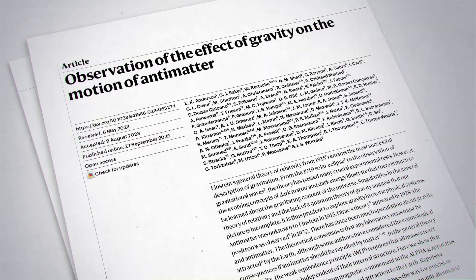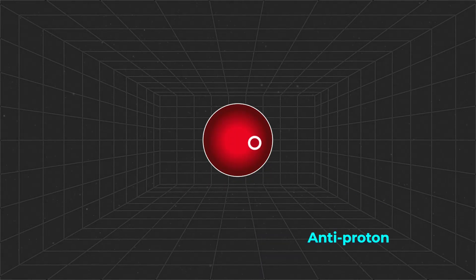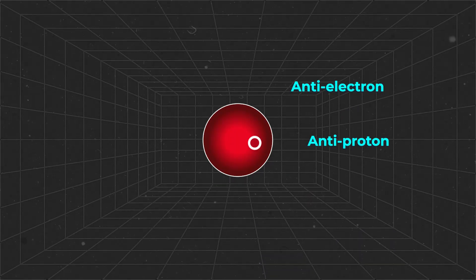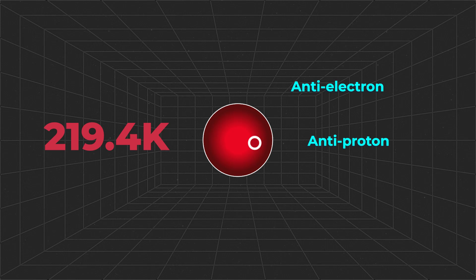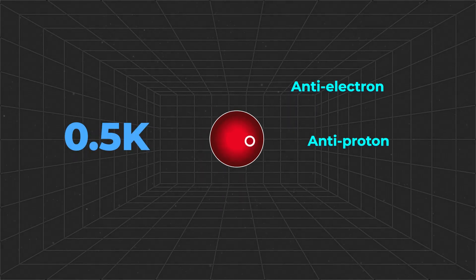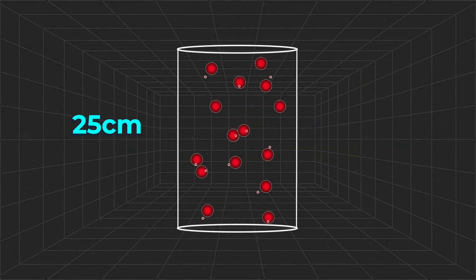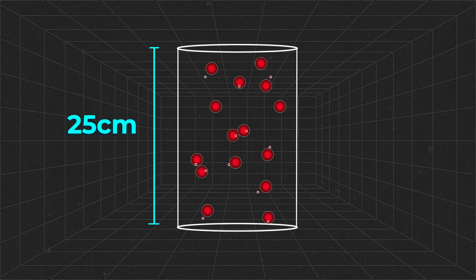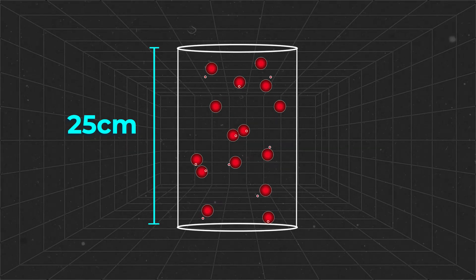The study, published in Nature, used anti-hydrogen atoms, an anti-proton and an anti-electron put together, which were cooled to half a degree above absolute zero, and were then confined in a 25cm long magnetic bottle with an opening at the top and the bottom.